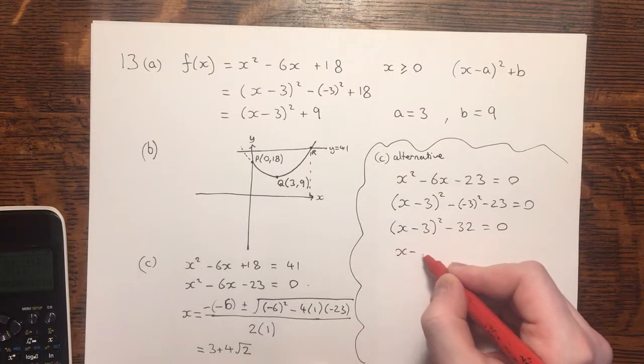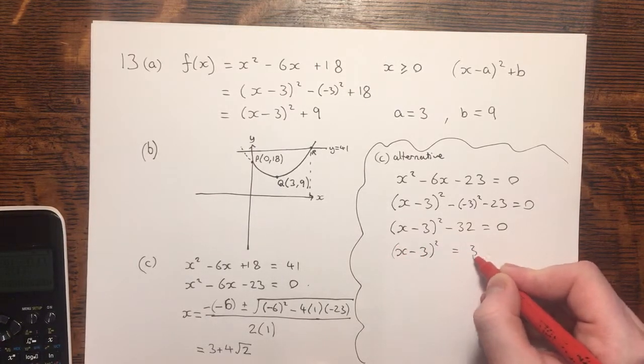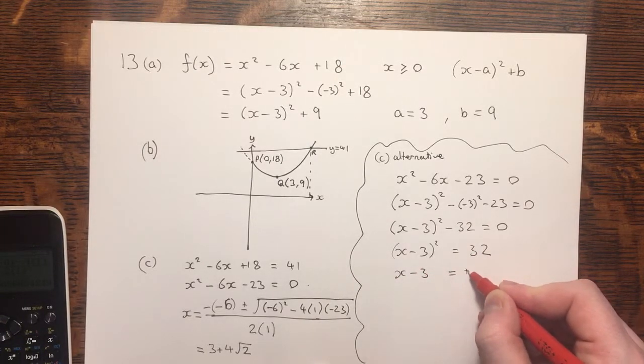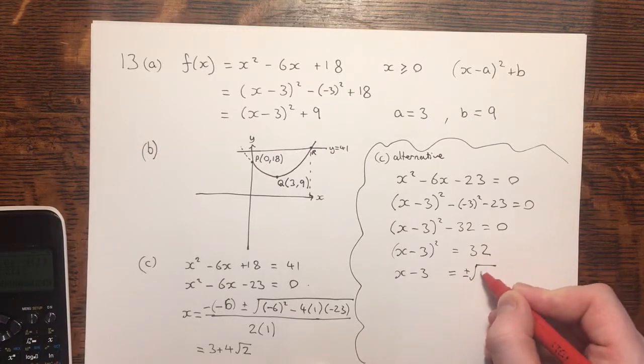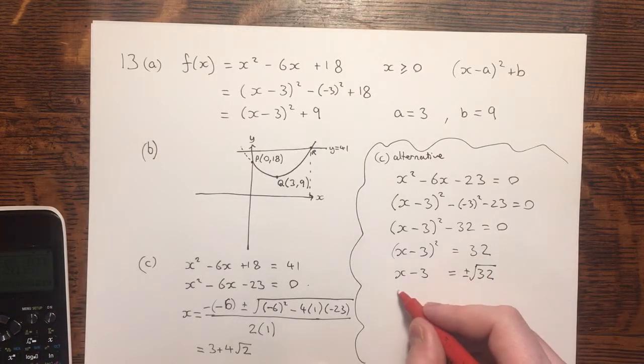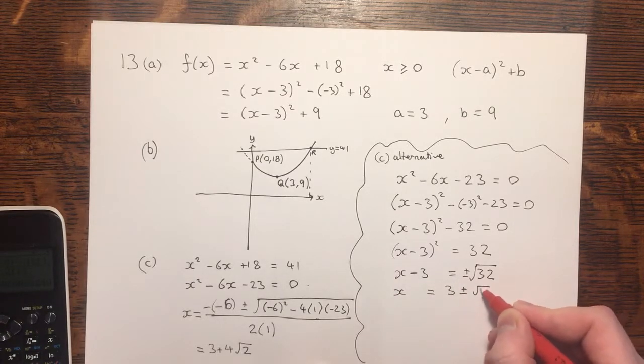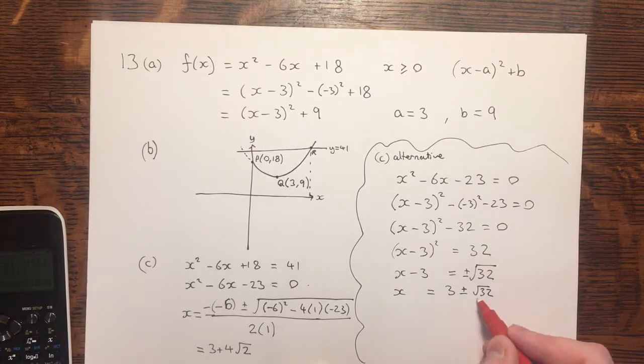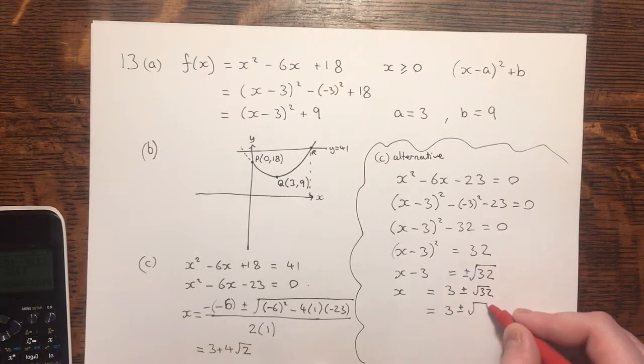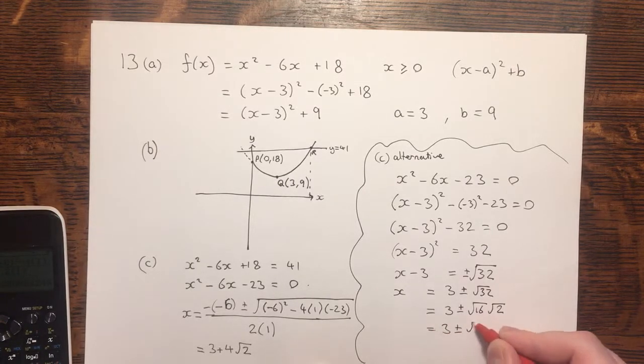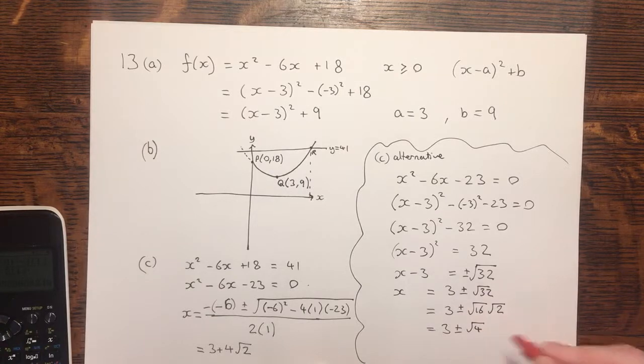Rearranging. Square rooting. But we're not quite where we want to be, because we can simplify this surd. 16, 2's are 32, but root 16 is 4.